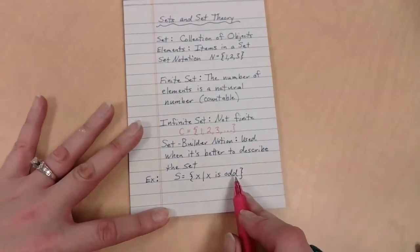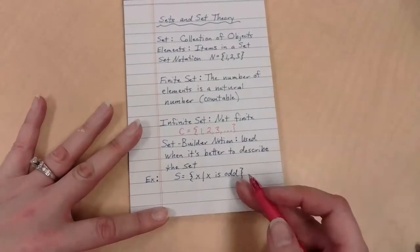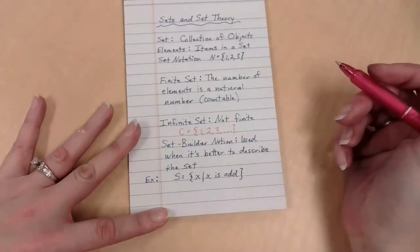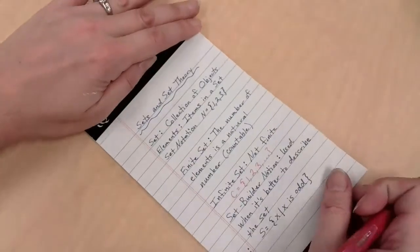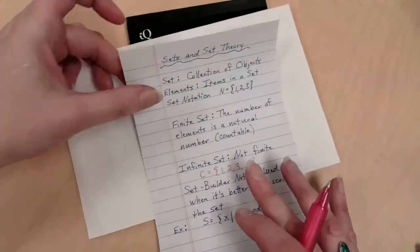Which means I now know that 5 is in this set, and negative 25 is in this set, and 13 is in this set. By describing them, I can use set builder notation sometimes more easily than trying to use one of my other types of sets. So there's some basic information to get us started there.